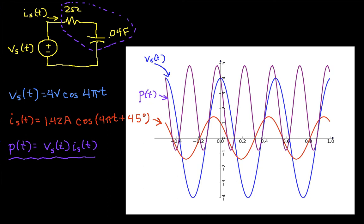And you'll notice that the instantaneous power is not constant. In fact, it goes from a peak of almost 5 watts to valleys of almost negative 1 watts. And it changes four times per second. So the instantaneous power is all over the place.